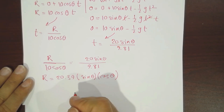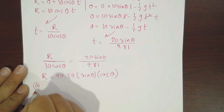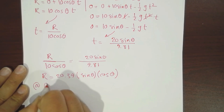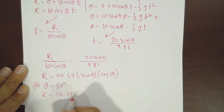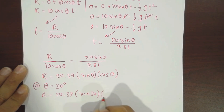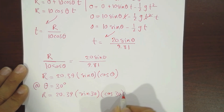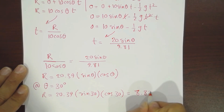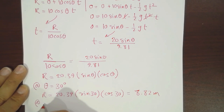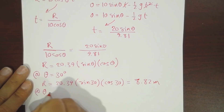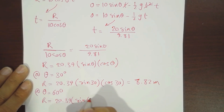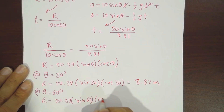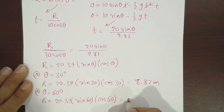Substituting theta equals 30 degrees: R equals 20.39 times sine 30 times cosine 30, which equals 8.82 meters. Changing the launch angle to 60 degrees: R equals 20.39 times sine 60 times cosine 60, which gives the same range — confirming that both angles produce identical range.